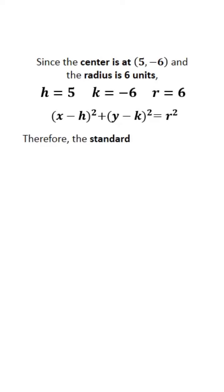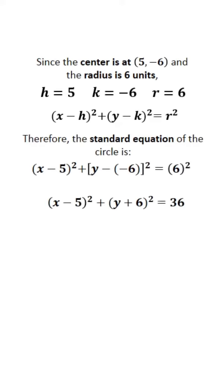Therefore, the standard equation is the quantity of x minus 5, squared, plus the quantity of y plus 6, squared, is equal to 36.